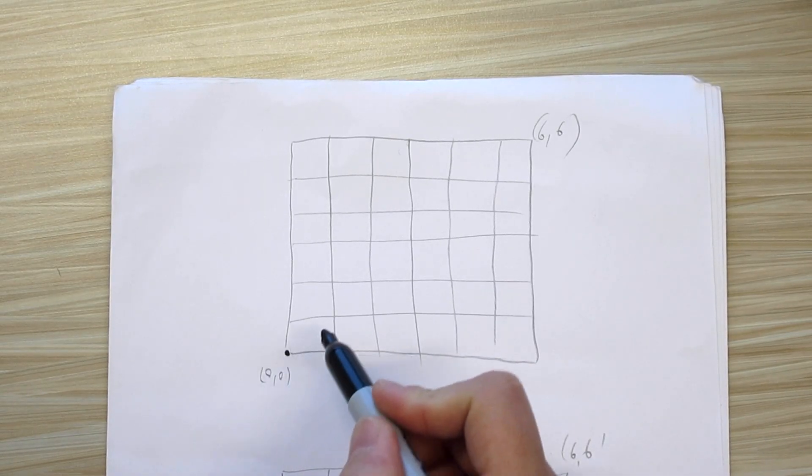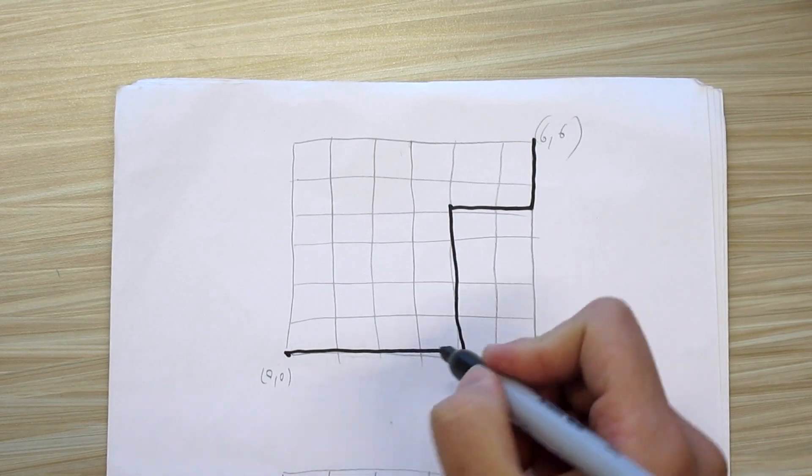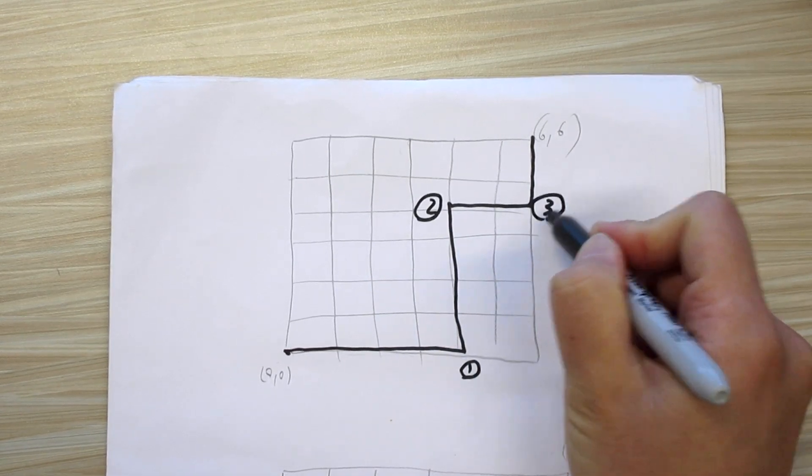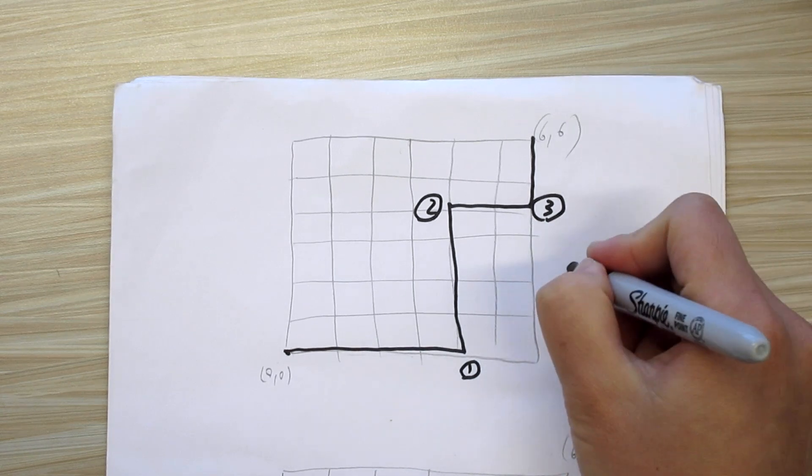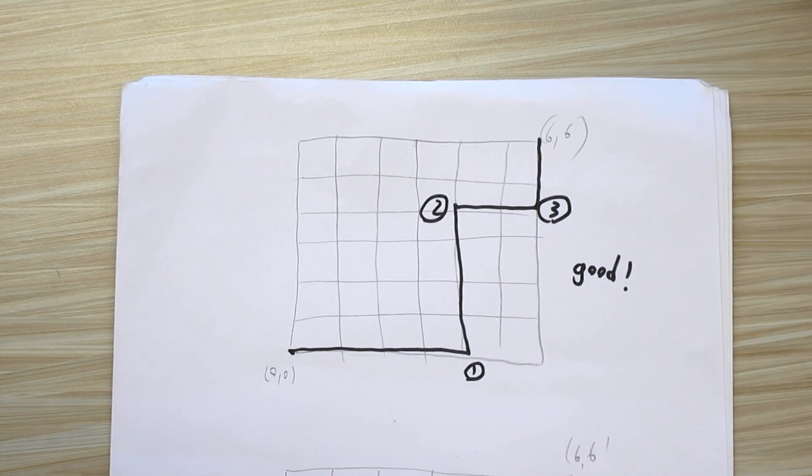We ask how many ways can you travel from (0,0) to (6,6) so that you stay on the grid, you walk right and walk up, and you only turn odd number of times. As an example, if you start off here and then you go like this, then how many times you turn, this is first turn, this is the second turn, this is the third turn. So you turn 3 times, 3 is odd, so this is good, and you want to count that as one of your paths from (0,0) to (6,6).